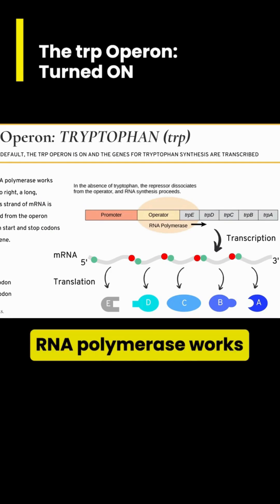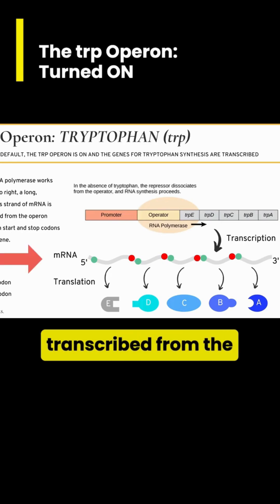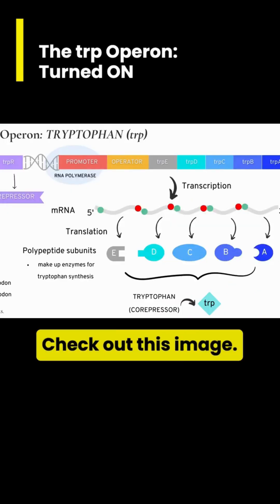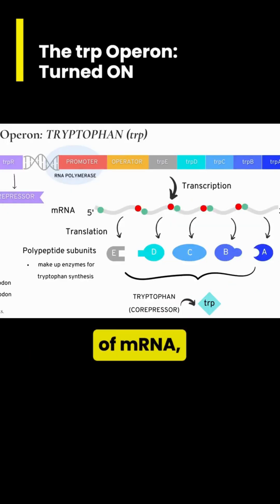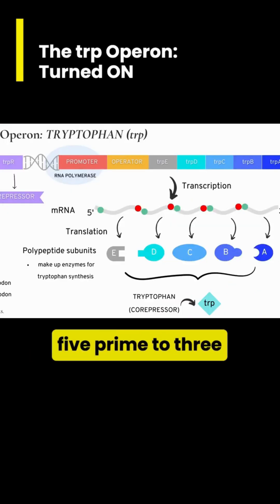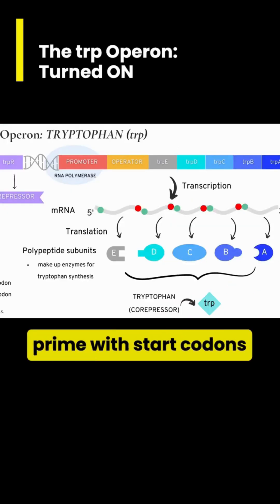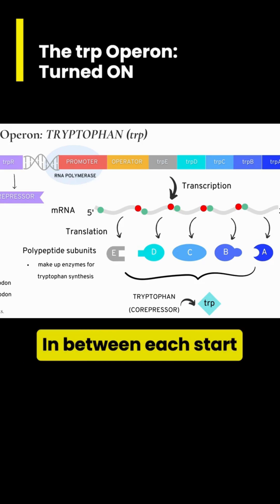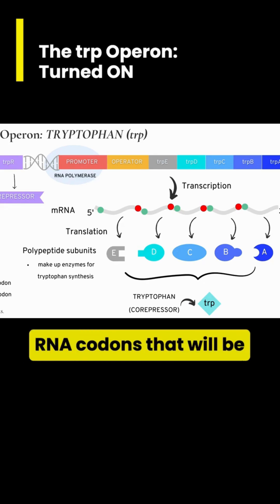As the RNA polymerase works from left to right, a single, long, continuous strand of mRNA is transcribed from the operon genes with start and stop codons for each gene. Check out this image — notice the single strand of mRNA 5' to 3', with start codons in green and stop codons in red. In between each start and stop codon are the RNA codons that will be translated into a gene.